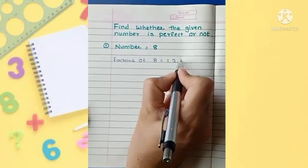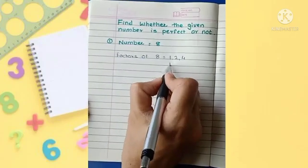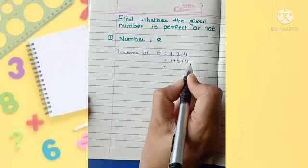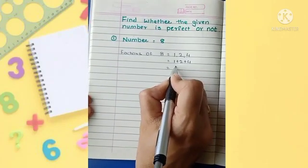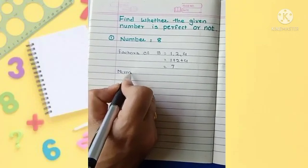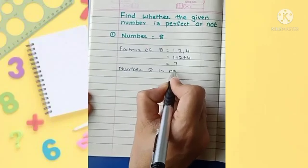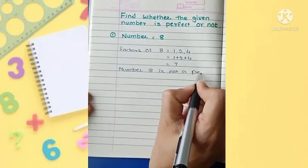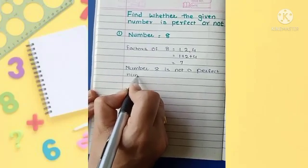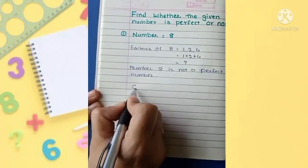2, 4. Then we have to add these factors: 1 plus 2 plus 4. And what is the addition? 7. Is it equal to 8? No. Number 8 is not a perfect number. We will take one more example. We will take number